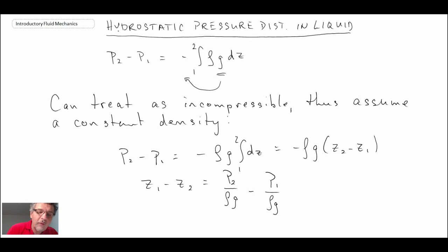With this equation, what does that tell us? If you know p1 at z1, you can solve for p2 at z2.